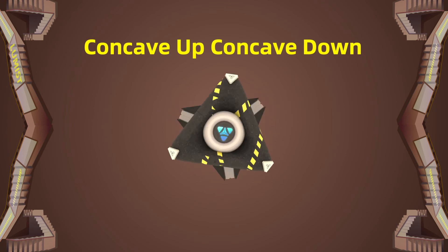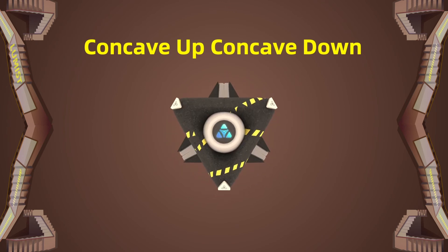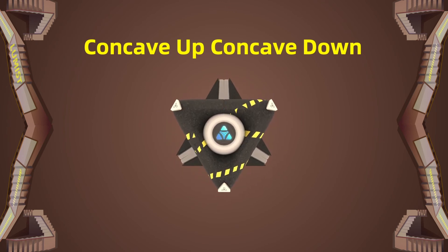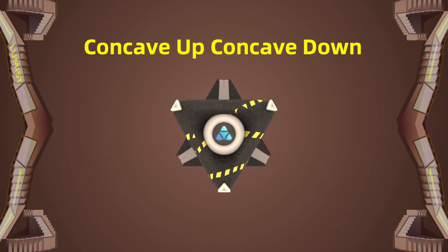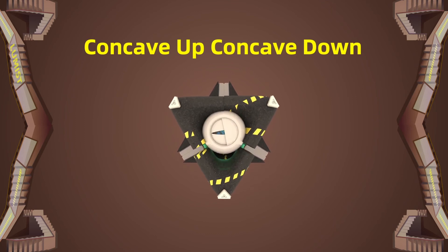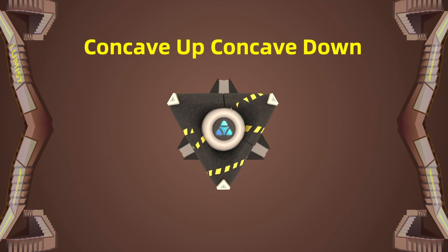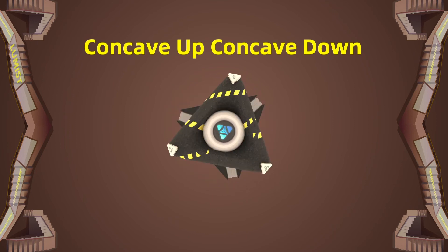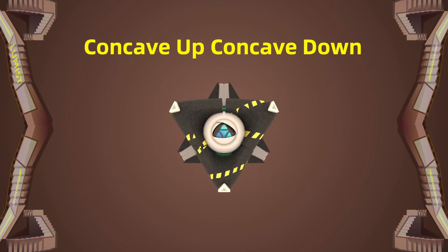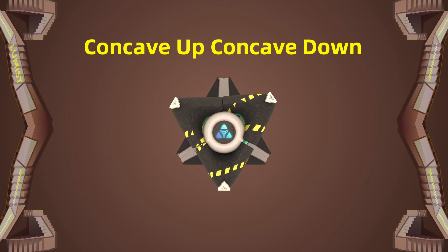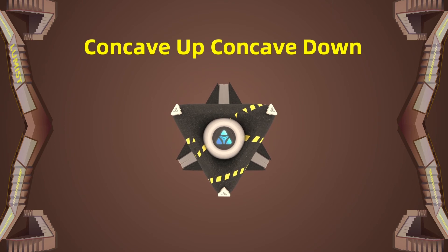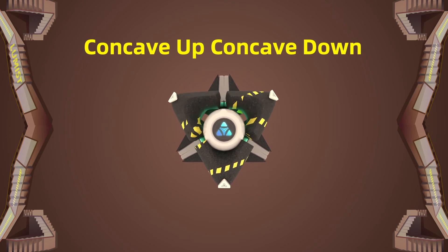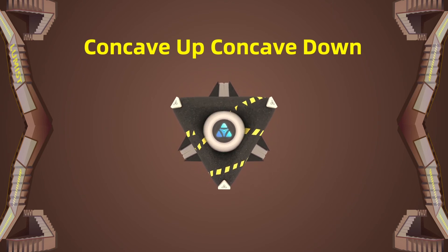Next, we will introduce the concept of concavity. There are two types of concavity: concave up and concave down. In some books, there may be use of the terms convex or concave, but it is easy to mix those up, so in our video we will just use concave up and concave down.